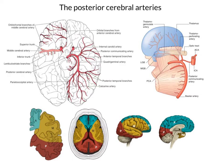Additionally, and very interestingly, if we look at the image on the top right, there are perforating branches emanating from the posterior cerebral artery and going up to the thalamus. These are kind of analogous to the lenticular striate branches of the middle cerebral artery, but these are going up to the thalamus instead.